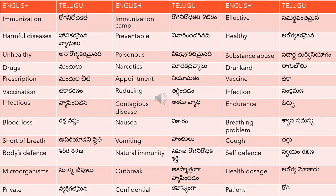The first word is immunization, which is 'roganirodha kata' in Telugu. Immunization camp is 'roganirodha kata sebiram'. Effective means 'samarthamantamayana'. Harmful diseases is 'hanikaramayana vyadhulu'. Preventable is 'nivarinsa dhaginadi'.